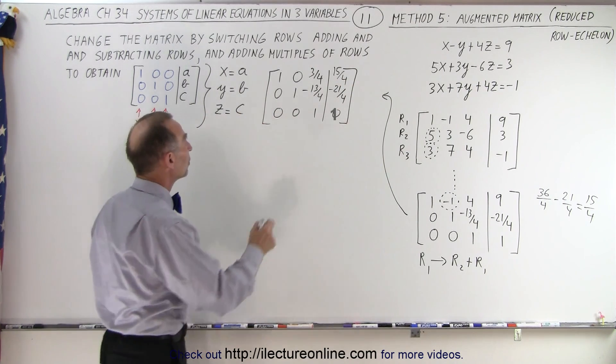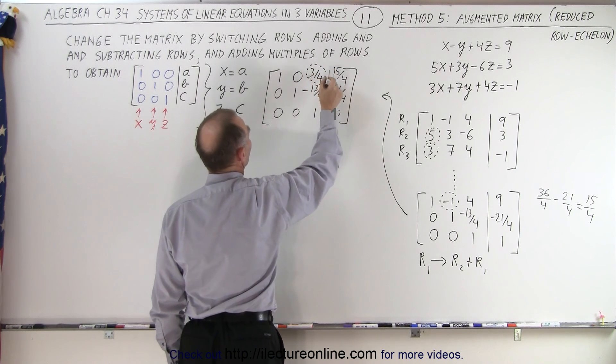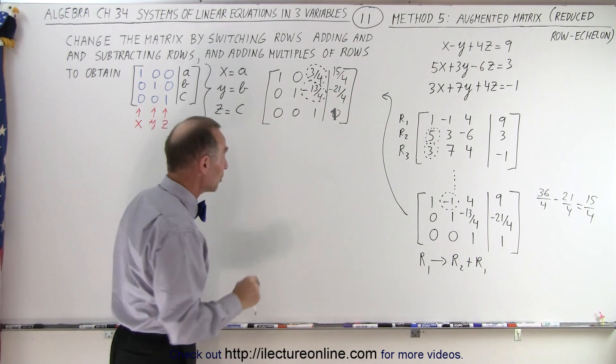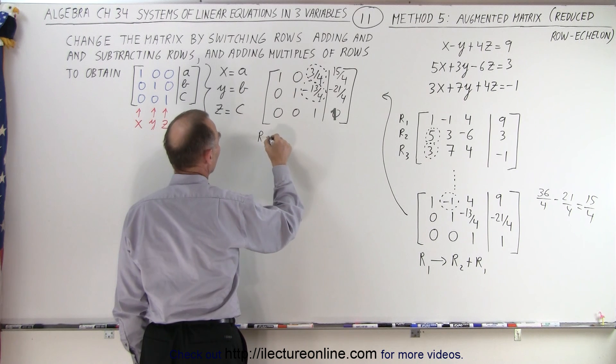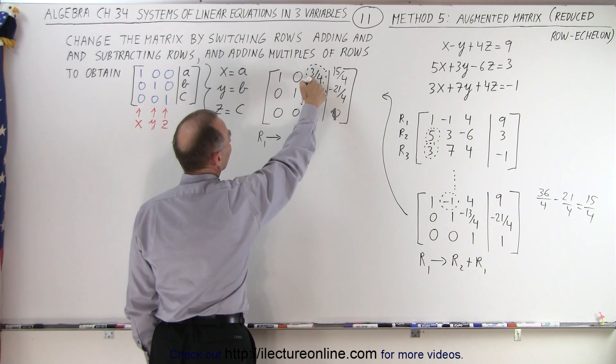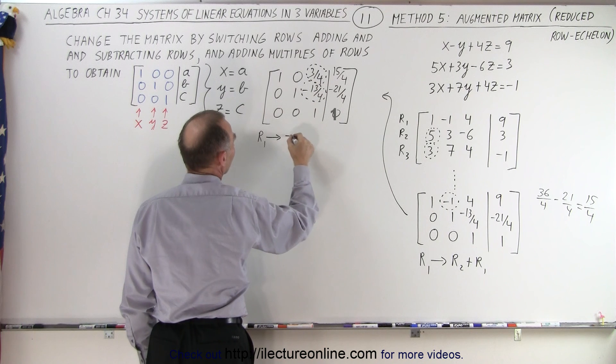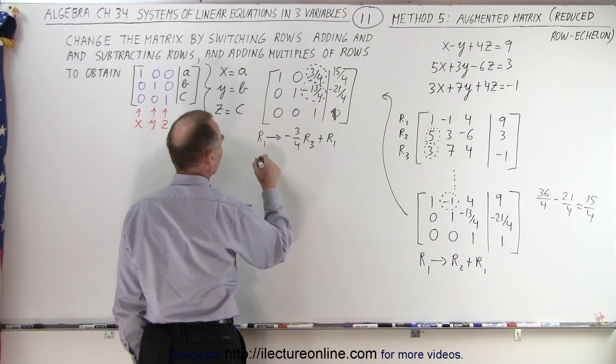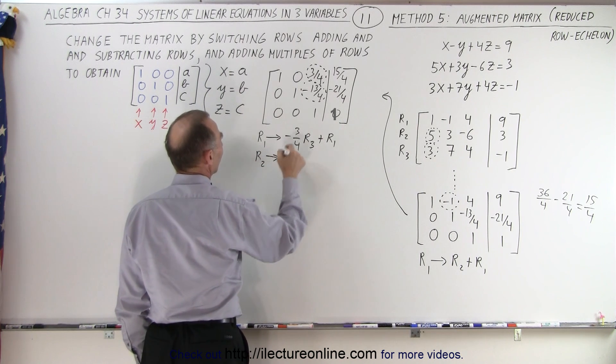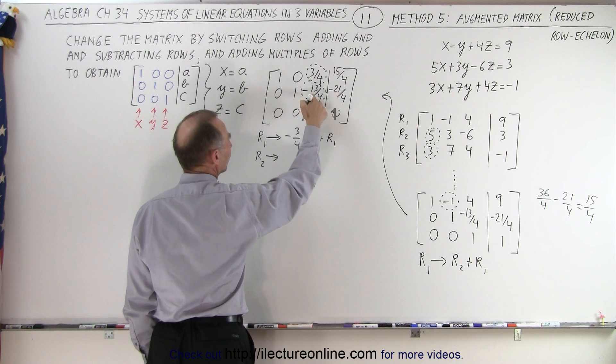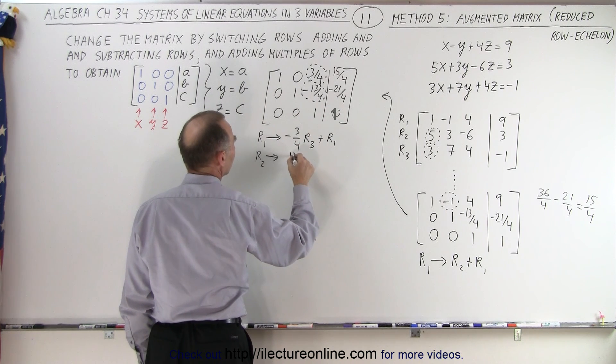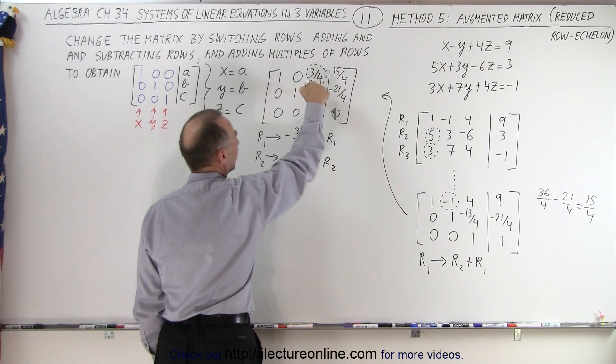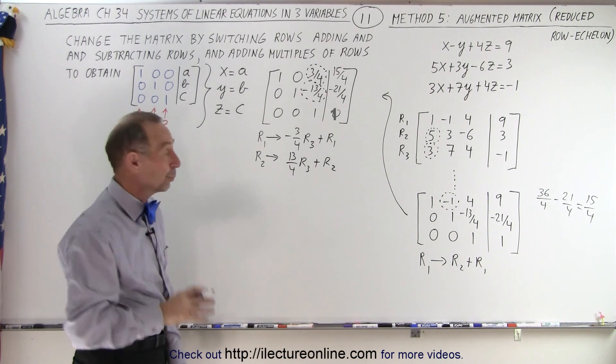The next thing we want to do is turn these two into zero. So I want this to become a zero, and I want this to become a zero. And row three is the one that has the one in it. So this is how we do that. We're going to take row one and replace it with the negative of this number, multiply times row three. So minus three quarters times row three, add it to row one. And for row two, we're going to replace that by the negative of that number, which is a positive 13 over four times row three. So 13 over four times row three, and add it to row two. And that will turn these two things into a zero, and then we're done.